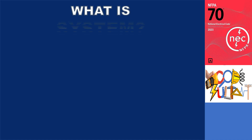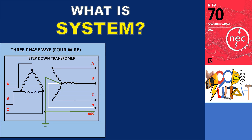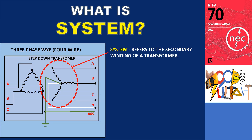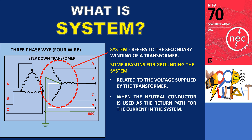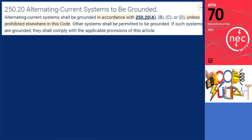In our discussion, the term 'system' specifically refers to the secondary winding of a transformer. One of the primary reasons for grounding the system is directly related to the voltage supplied by the transformer. In certain situations, grounding becomes necessary when the neutral conductor is used as the return path for the current in the system. Section 250.20 states that alternating current systems shall be grounded in accordance with 250.20 A, B, C, or D, unless prohibited elsewhere in the Code.